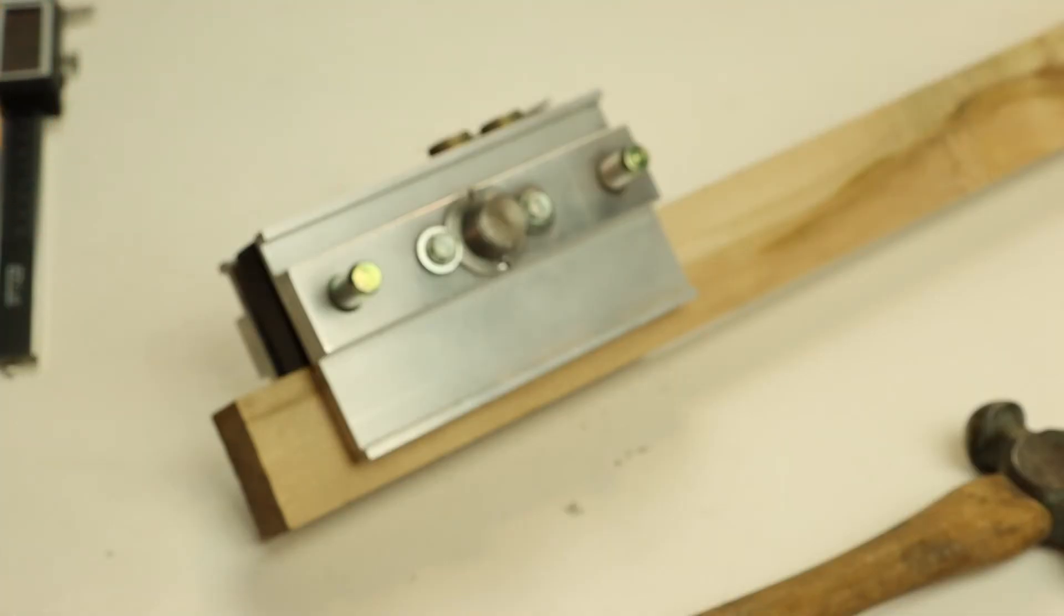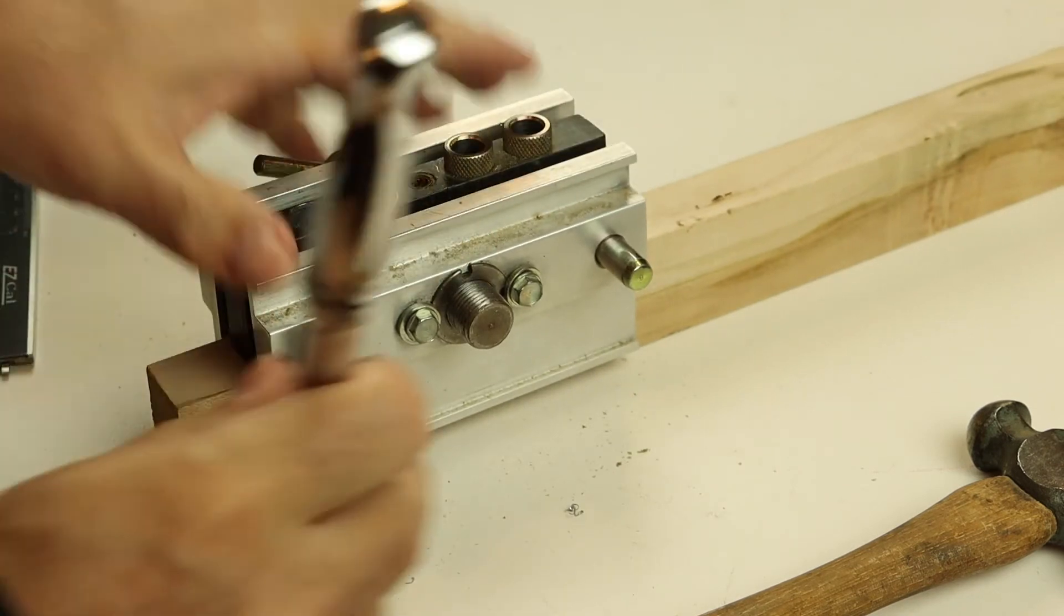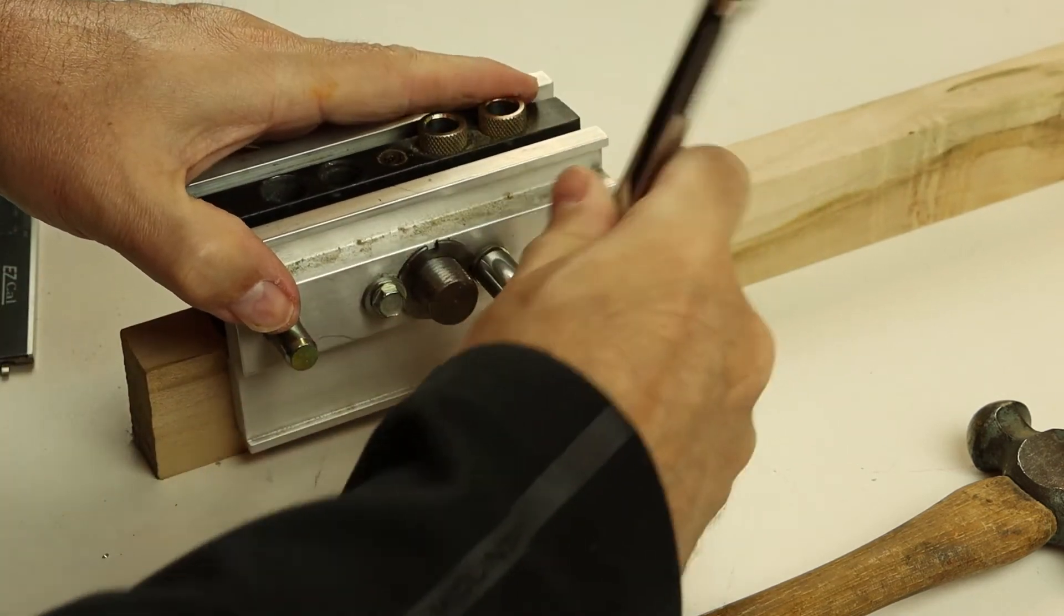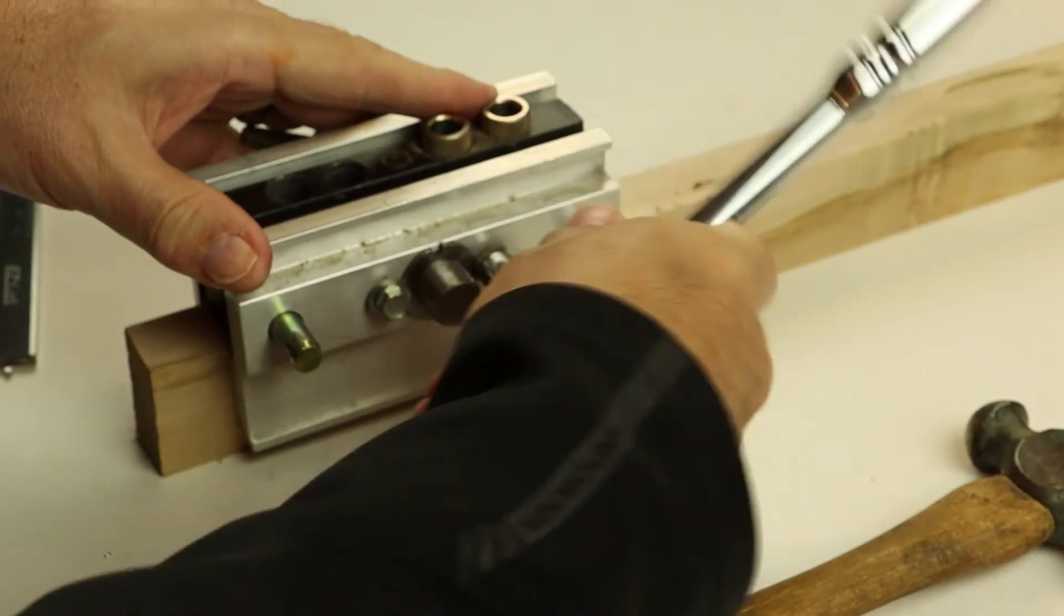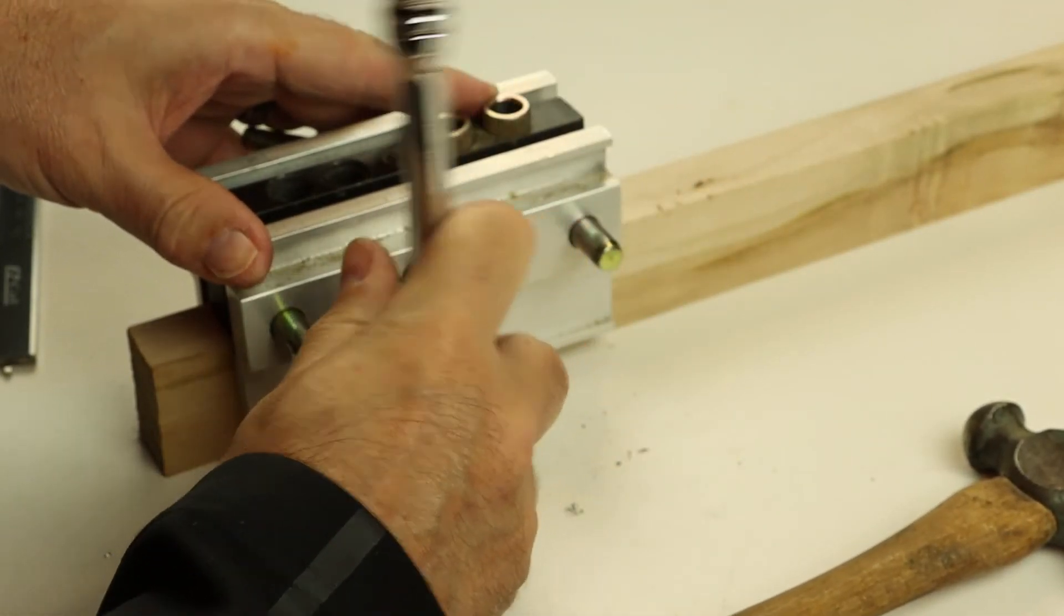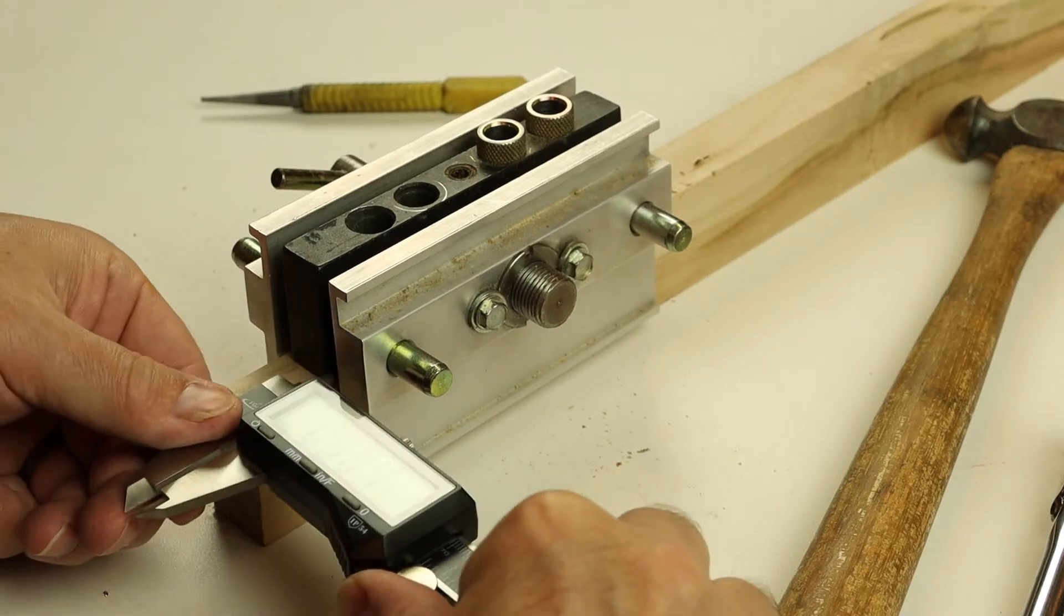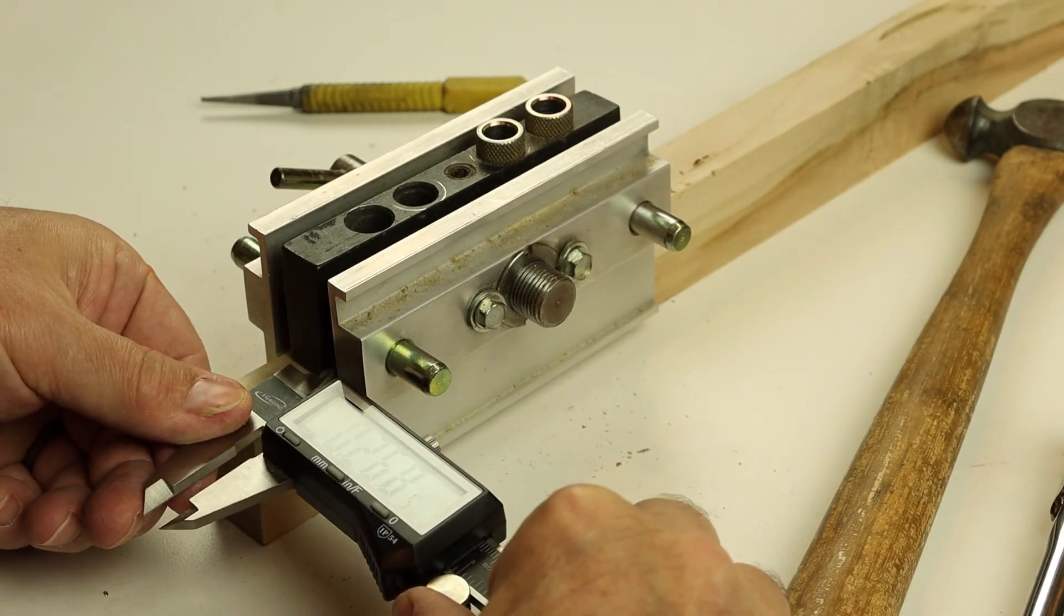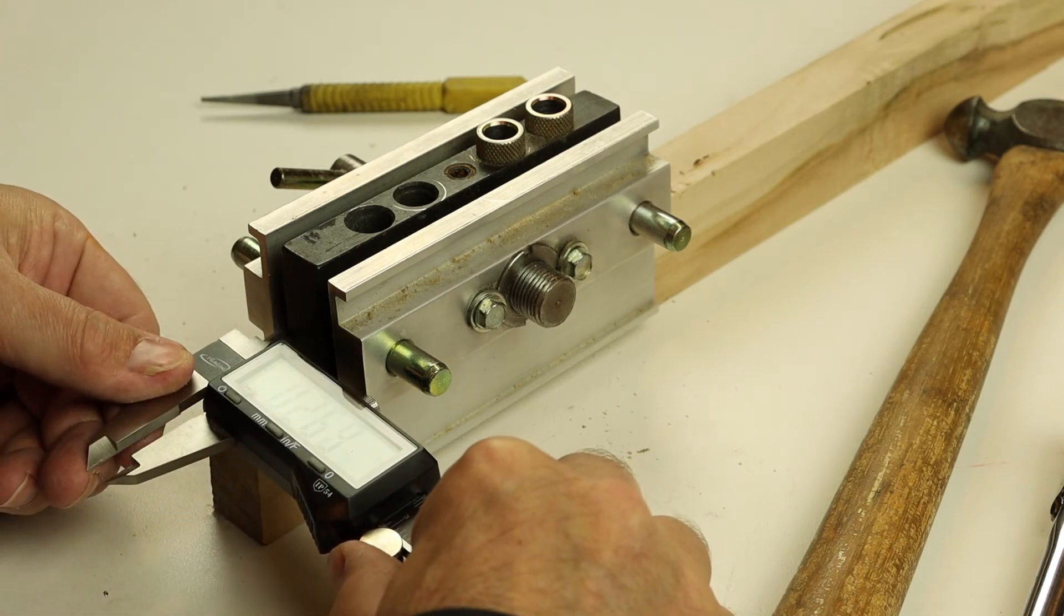Once you get close, I would say go ahead and fully tighten the bolts down, because without doing that you're really not going to see how the jig is actually going to be in use. 269, 269. Perfect.